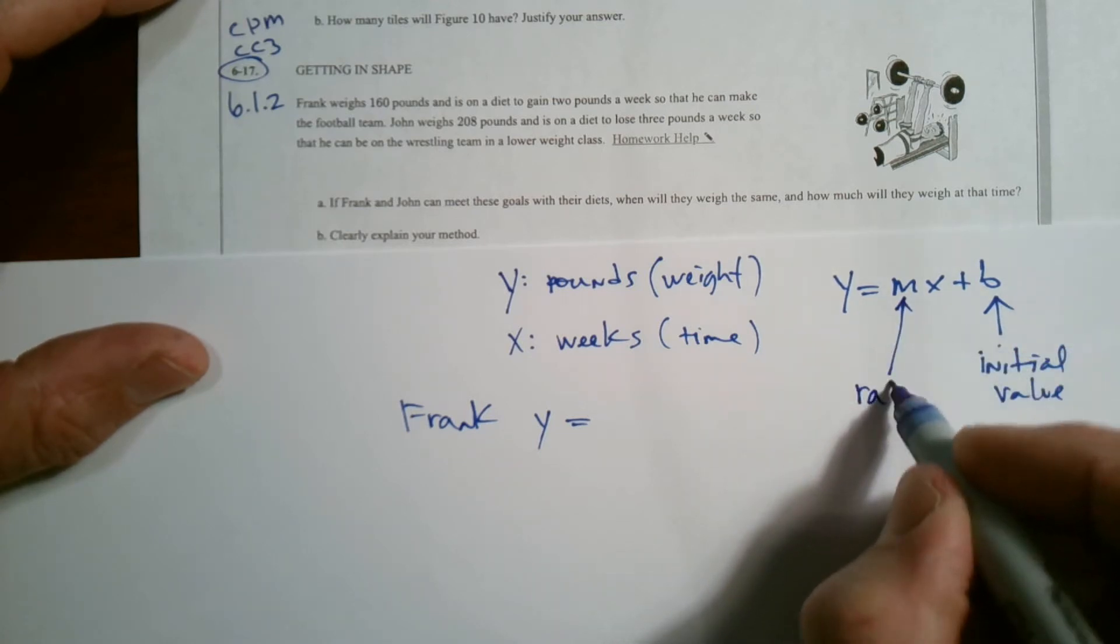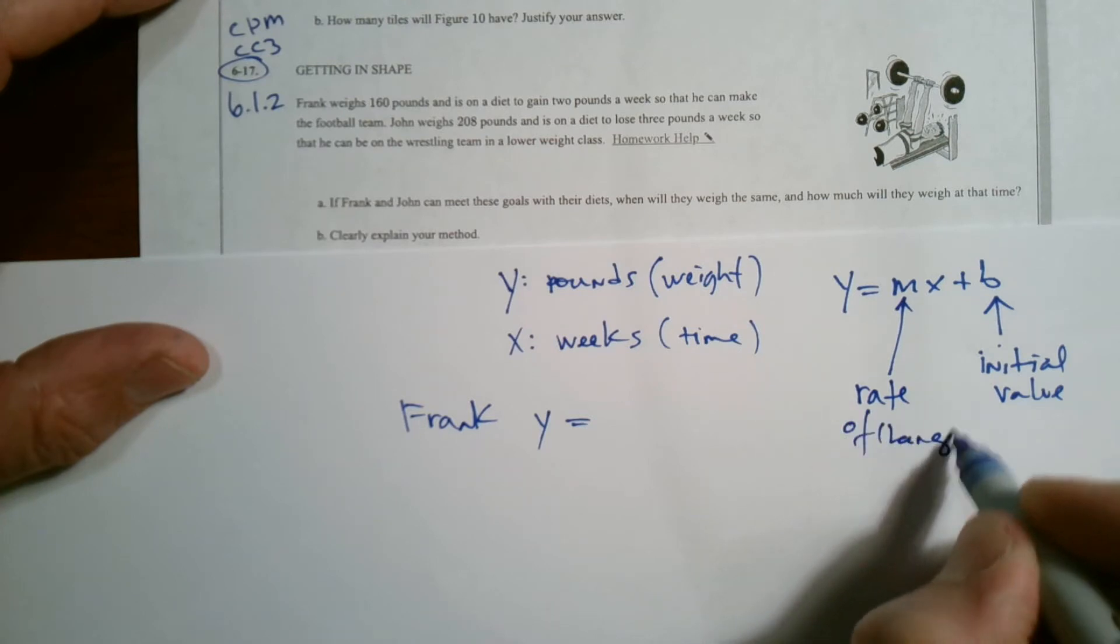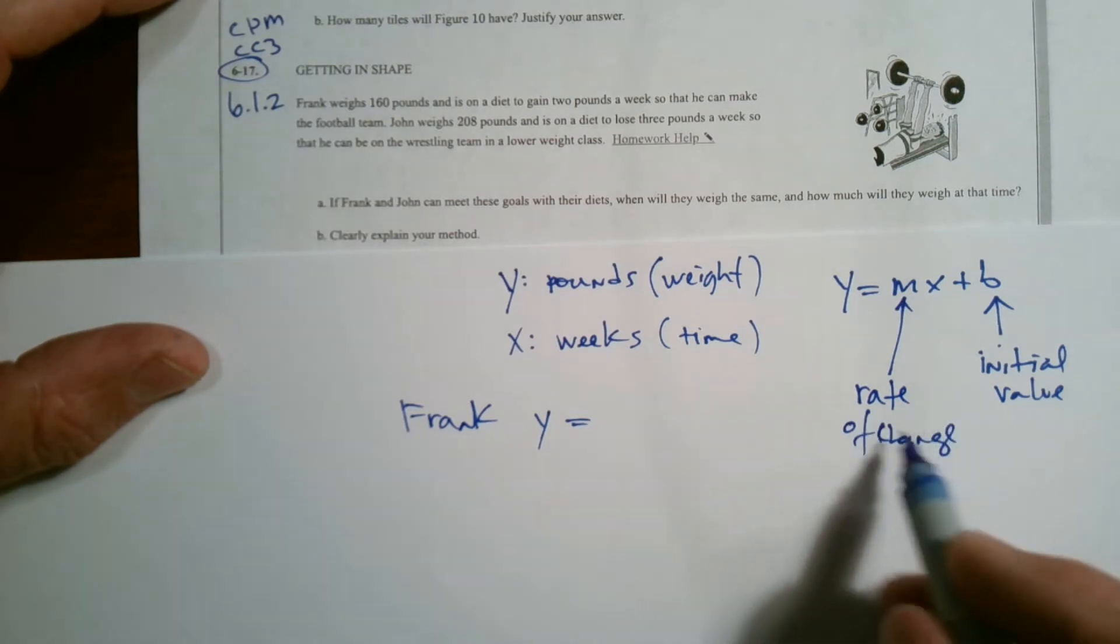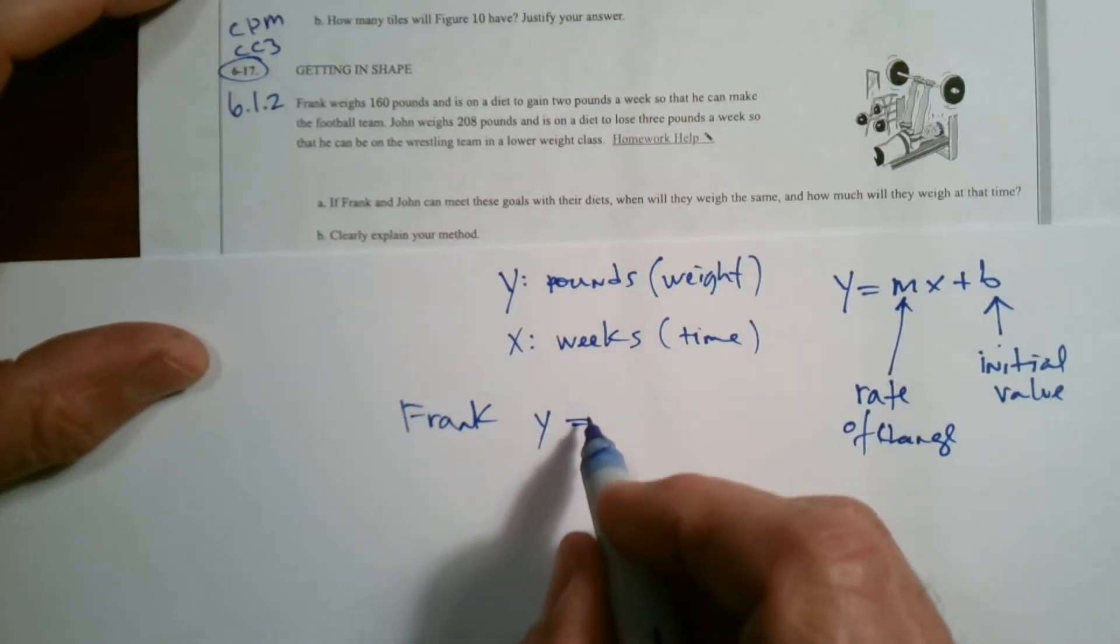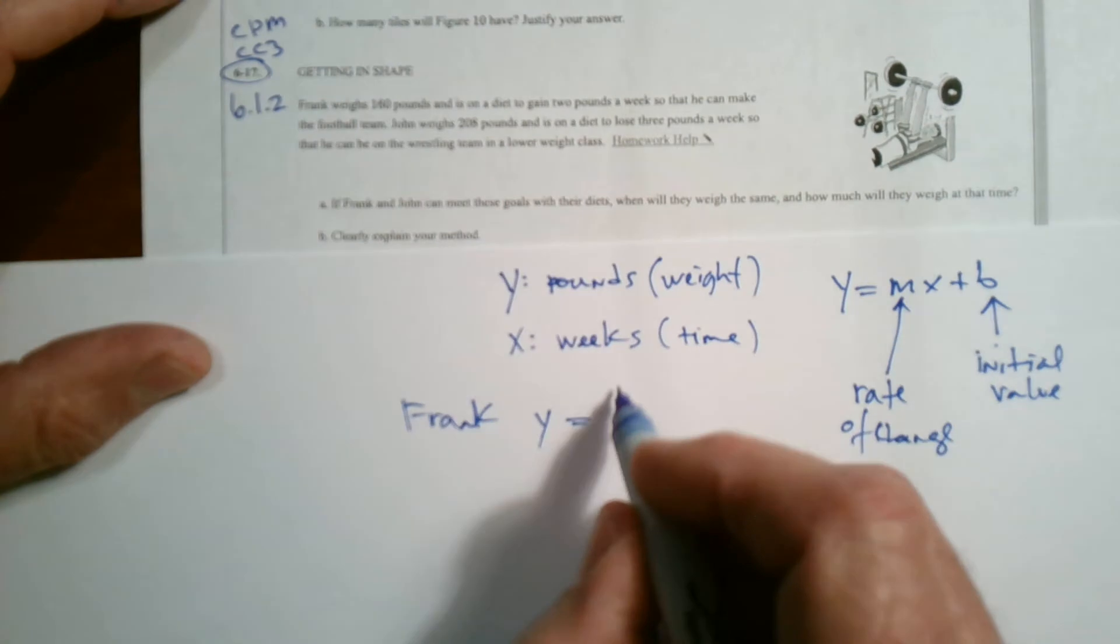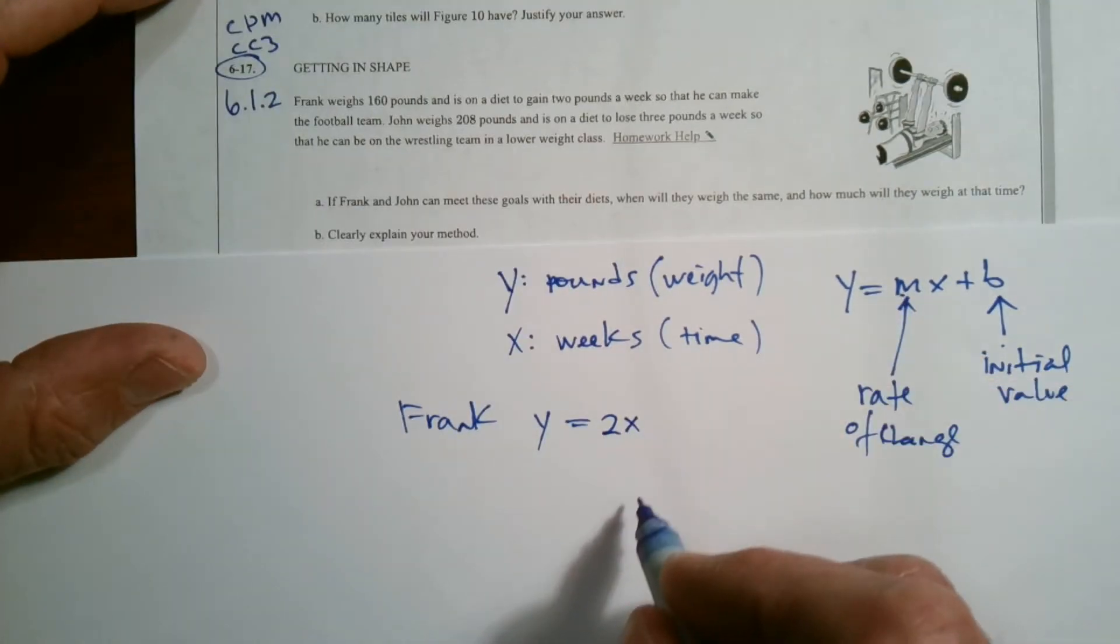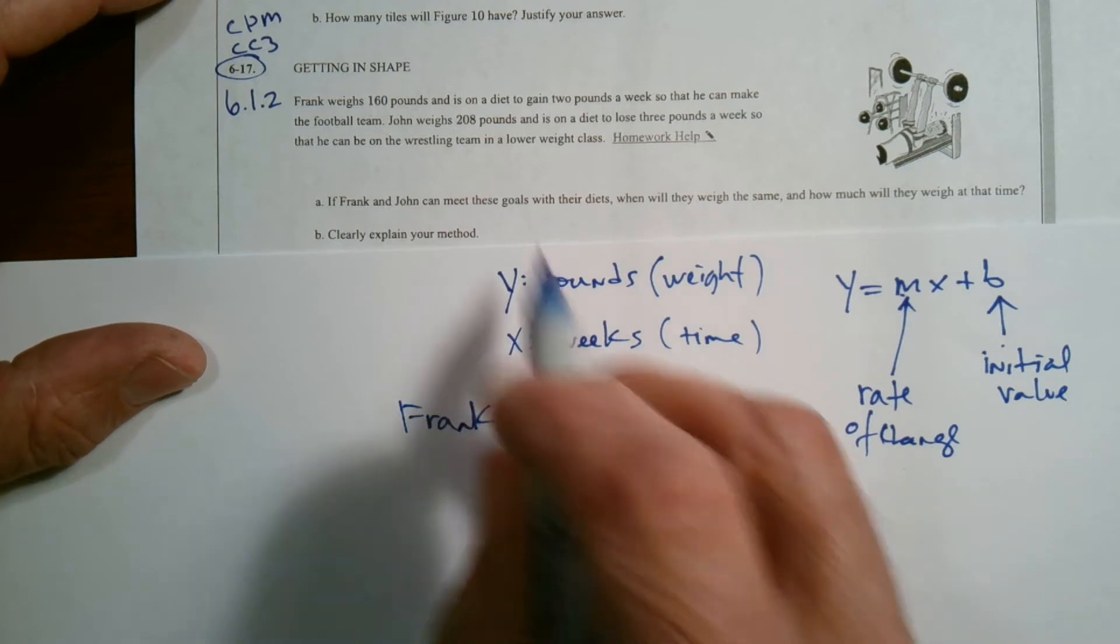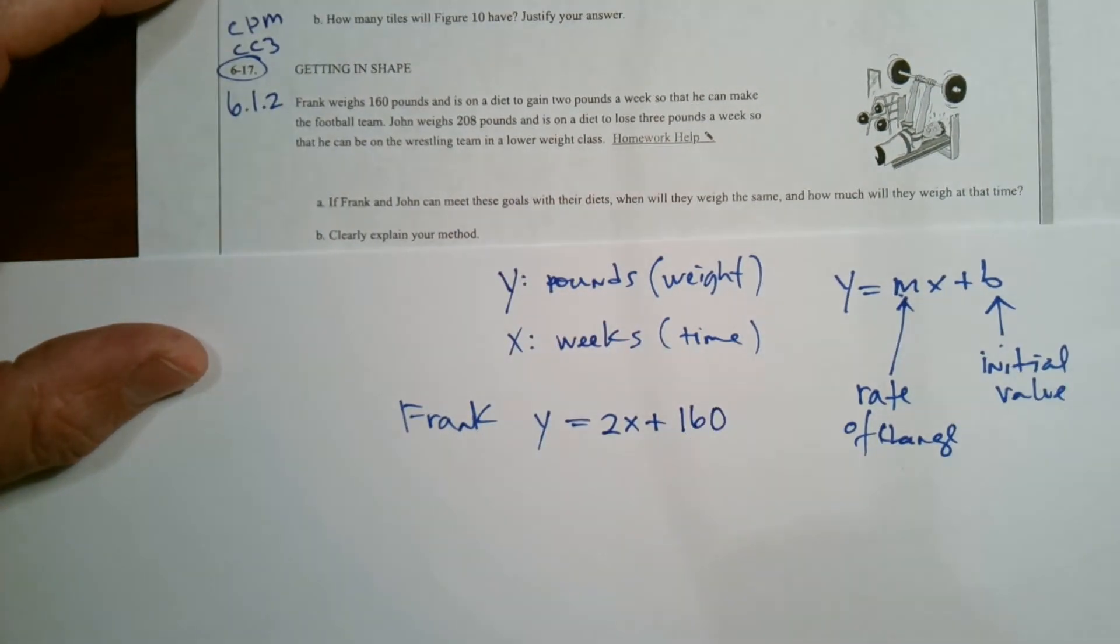And M is known as the rate. It's that rate of change, the rate of change, or on a graph, it's the slope, but it's the rate of change that M is. So with Frank, we know his rate is two pounds and he's gaining. So it's a positive two pounds. So that's the rate per week. That's the X plus the initial, which was 160. So there's Frank's equation.